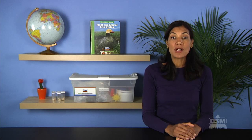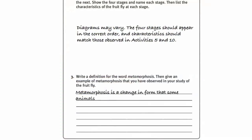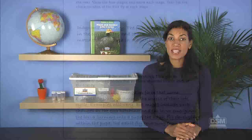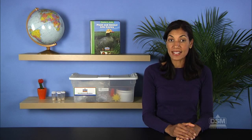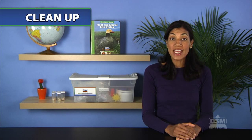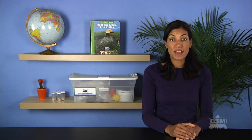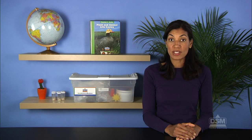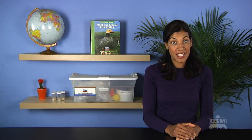Distribute a copy of Activity Sheet 10 to each student and instruct them to complete it. Finally, inform students that in the next activity, Plants and Animals, they will compare the life cycle of plants and animals. To conclude the activity, have students return the fruit fly vials, magnifiers, and file folders to their designated area. Leave the chart in its display position and return the masking tape to the kit.